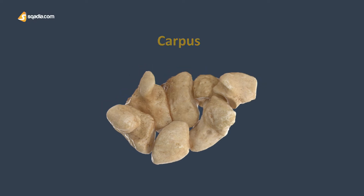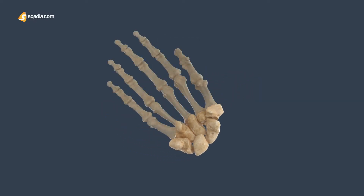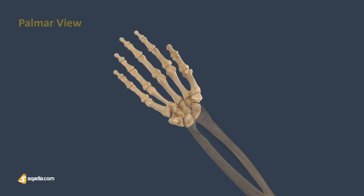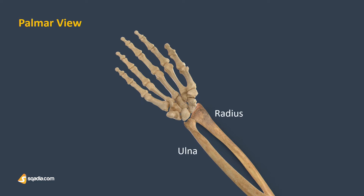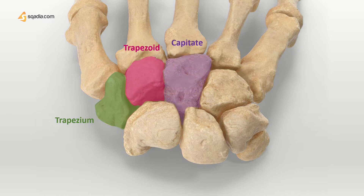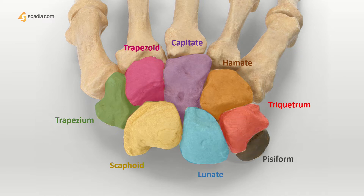The word carpus is the anatomical term for the wrist, which is associated with the metacarpal bones of the hand and the radius and ulna of the lower arm. It is a group of 8 individual carpal bones: the trapezium, trapezoid, capitate, hamate, scaphoid, lunate, triquetrum, and pisiform.